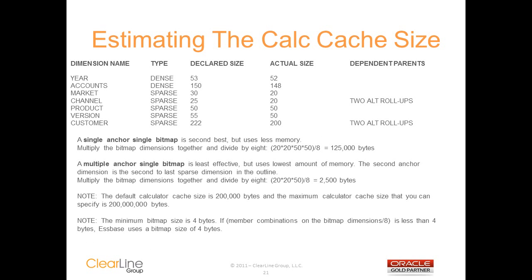The single anchor single bitmap uses basically the same formula as the single anchor multiple bitmap. You just need to skip the two constant bitmaps and the total number of dependent parents in the calculation. So in this sample you would just multiply the bitmap dimensions together and divide by 8 — that would be 20 times 20 times 50 times 50 divided by 8 to give you 125,000 bytes for your cache. The multiple anchor single bitmap is even simpler to figure out. You use the same formula as the single anchor single bitmap, except you now consider the last two sparse dimensions as anchor dimensions. So you would just multiply the bitmap dimensions together and divide by 8 — in this case 20 times 20 times 50 divided by 8 for 2,500 bytes.